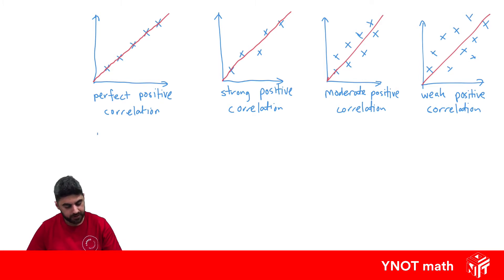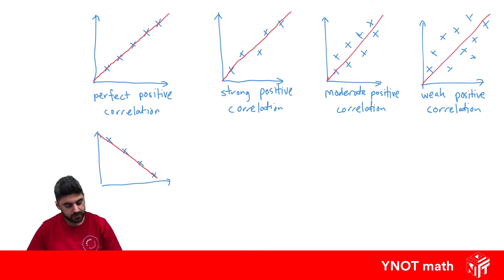We can also have our data going in the other direction. Something like this, where a line goes perfectly through but downwards — this shows a perfect negative correlation.